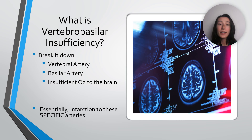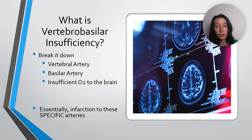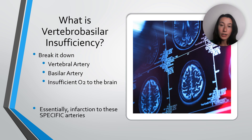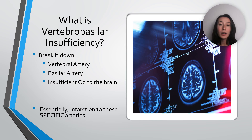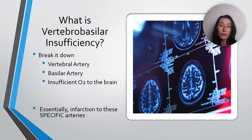What is vertebro-basilar insufficiency, or VBI? If you break it down, vertebro is for the vertebral artery, basilar is for the basilar artery, and insufficiency means there's a lack of oxygen to the brain — essentially an infarction to these specific arteries. Now, you should immediately associate this term with the five D's and three N's. You might have them memorized, but understand that's a very surface-level way of learning. You're not actually associating the anatomy and physiology behind it, and that's what this lecture is all about.